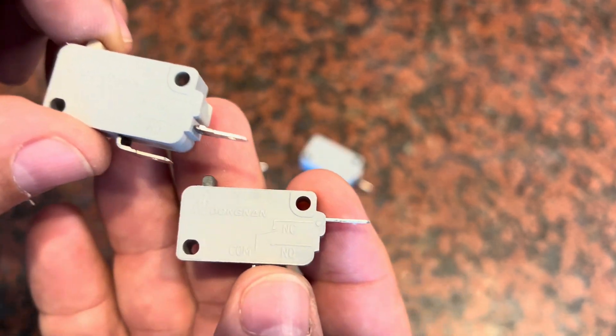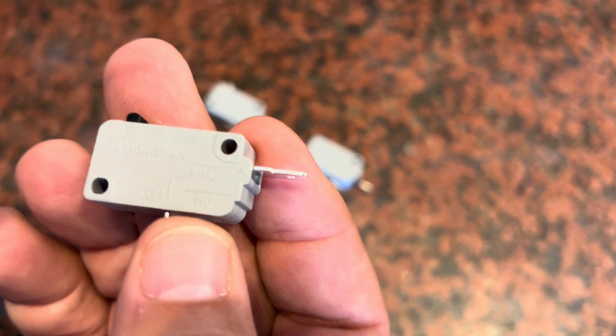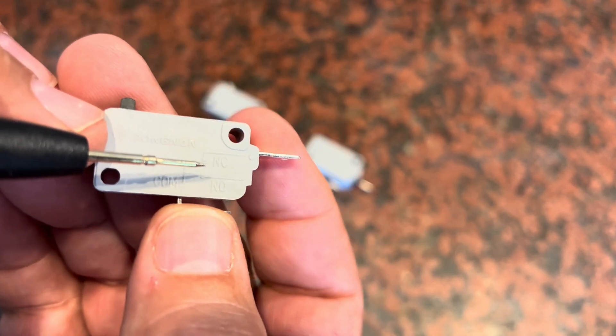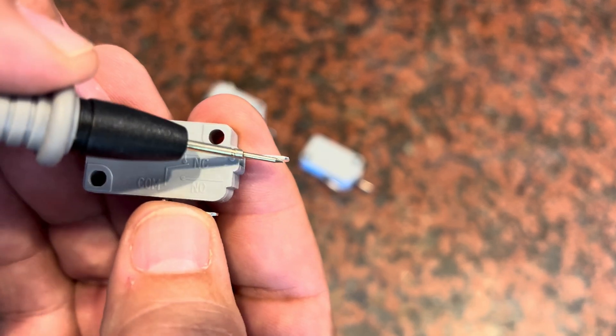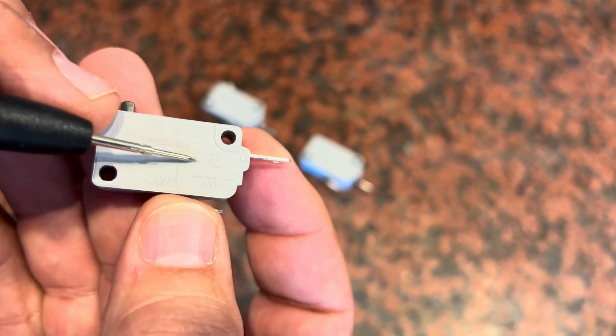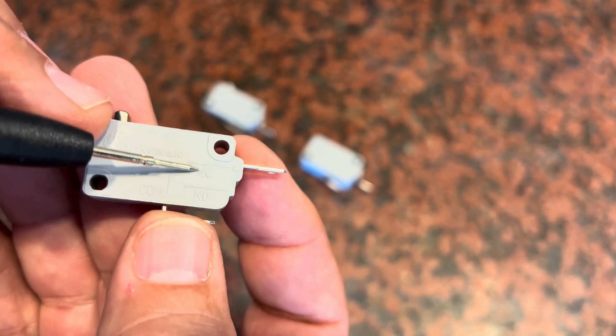So you're going to look at the switch that you're dealing with and in this case here this switch is a normally closed switch. Why? Because the prong that's going to plug in is lined up right here with the NC, normally closed.